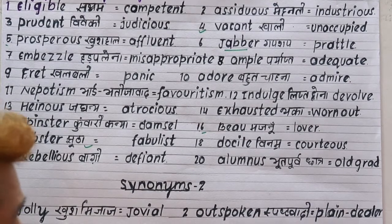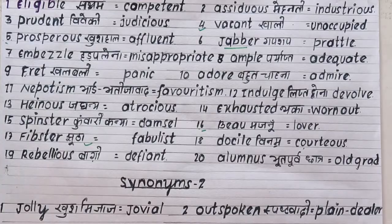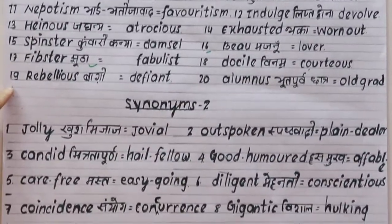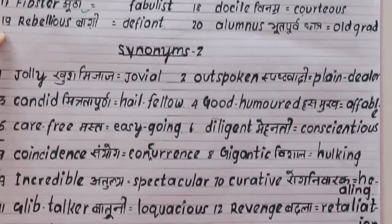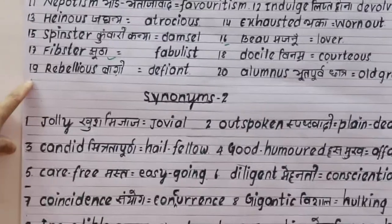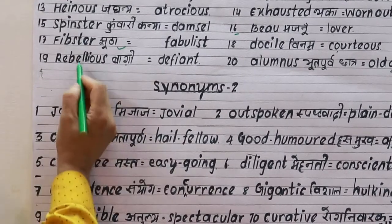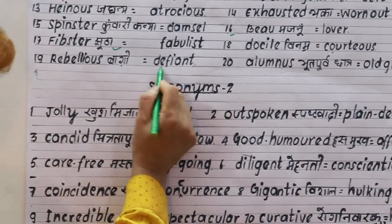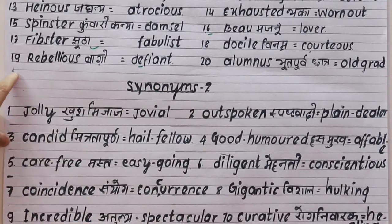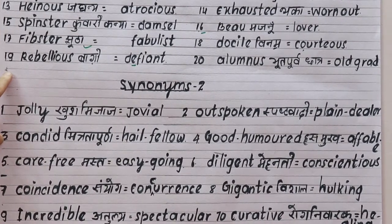Number eighteen is 'docile', meaning courteous, obedient, and well-behaved. The child is so docile. Number nineteen is 'rebellious', meaning disobedient or defiant. The synonym is 'defiant'. For example: the child is so rebellious, naughty, mischievous.